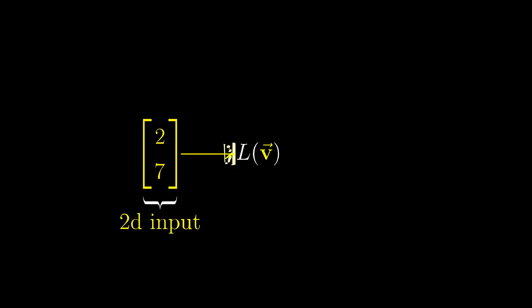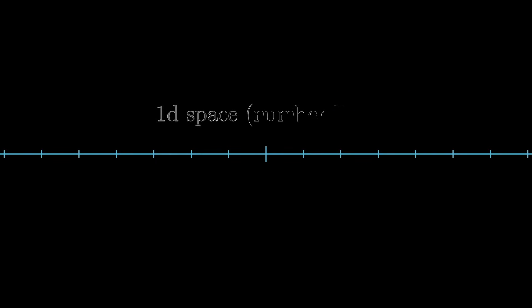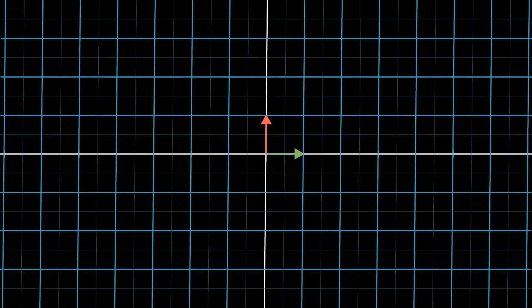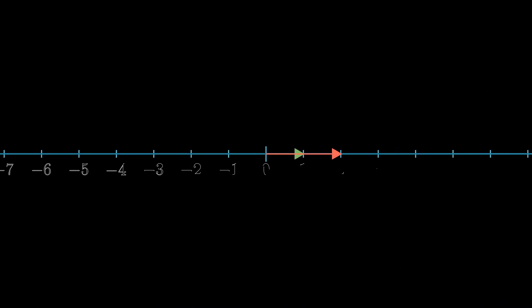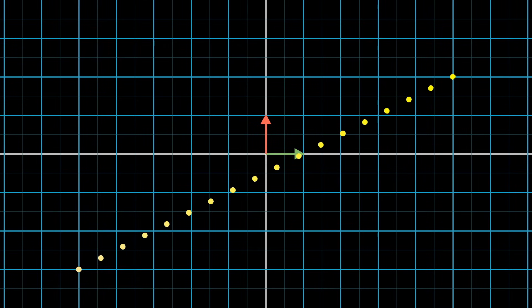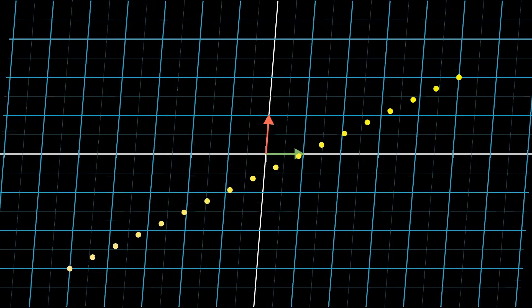You could also have a transformation from two dimensions to one dimension. One dimensional space is really just the number line, so a transformation like this takes in 2D vectors and spits out numbers. Thinking about grid lines remaining parallel and evenly spaced is a little bit messy due to all of the squishification happening here. So in this case, the visual understanding for what linearity means is that if you have a line of evenly spaced dots, it would remain evenly spaced once they're mapped onto the number line.